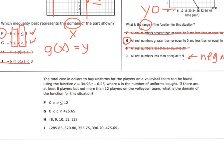On the last one, the total cost in dollars to buy uniforms for the players on a volleyball team can be found using this function, and they give you an equation. U is the number of uniforms. If there are at least 8 players but not more than 12 players on the team, what is the domain of the function? So domain remember is x. In this case our x corresponds with the letter u. That means our answer cannot include the letter c, so G cannot be it.